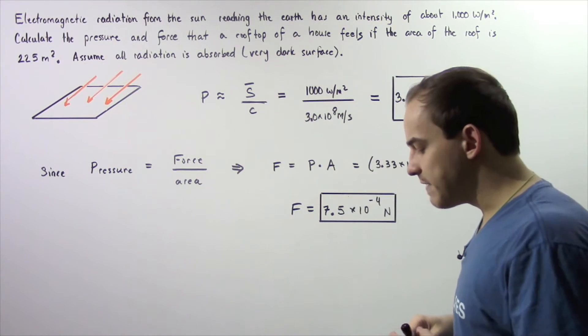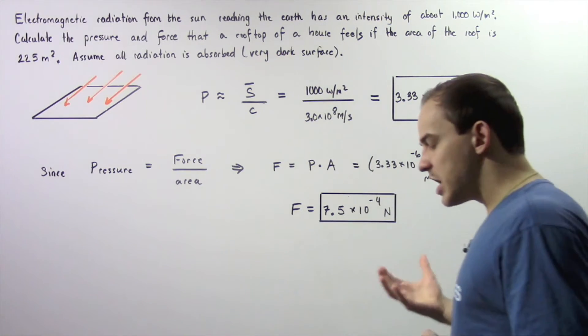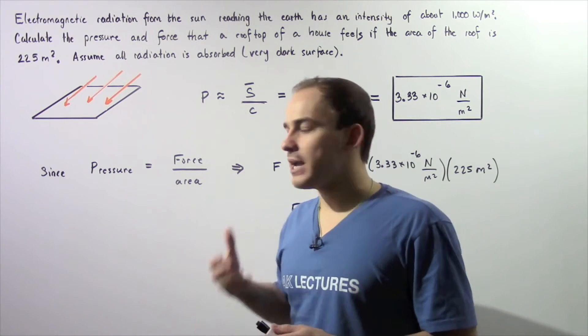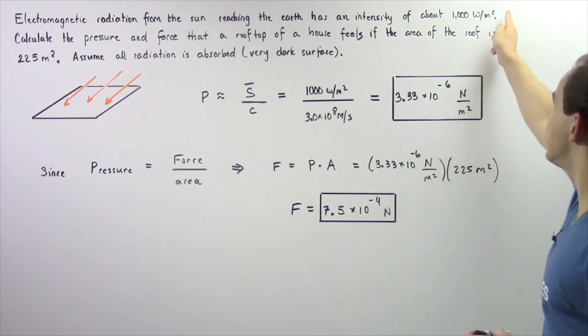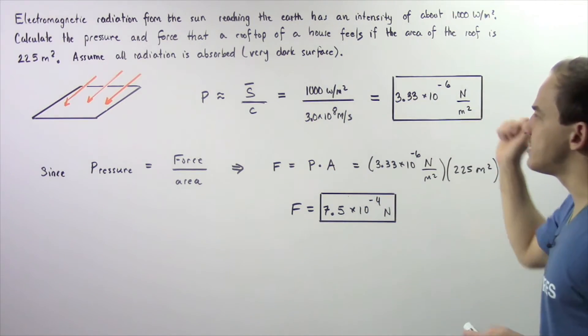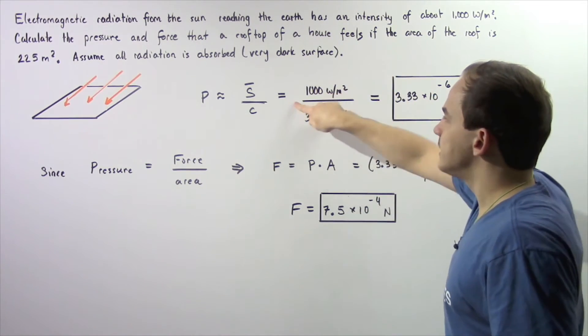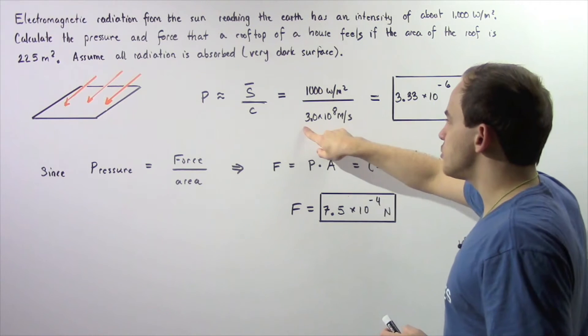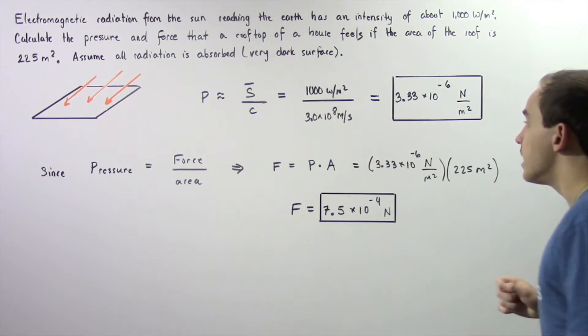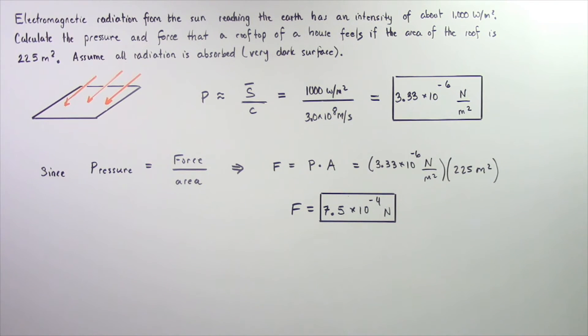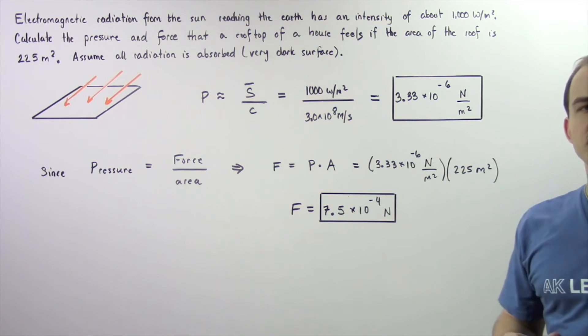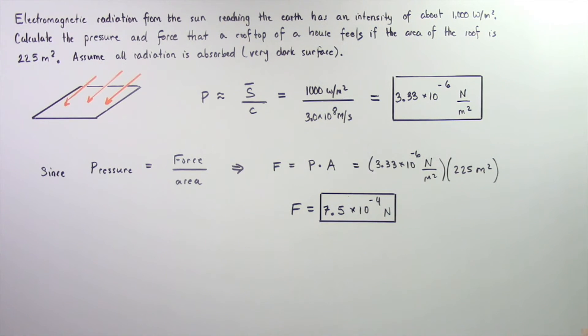The Poynting vector gives us the power per unit area, which is 1000 watts per meter squared divided by c, which is 3×10⁸ meters per second. This gives us a value of about 3.33×10⁻⁶ newtons per meter squared for the pressure caused by the electromagnetic radiation.